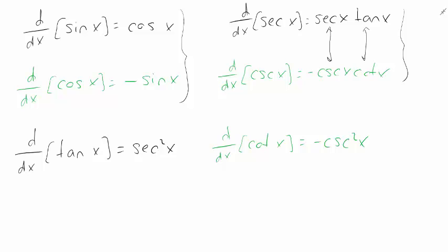So if you remember that the derivative of secant is secant tangent, for cosecant, you put a negative sign. Secant becomes cosecant and tangent becomes cotangent. Likewise, for tangent and cotangent, the derivative of tangent is secant squared. The derivative of cotangent is cosecant squared, and we get a negative.